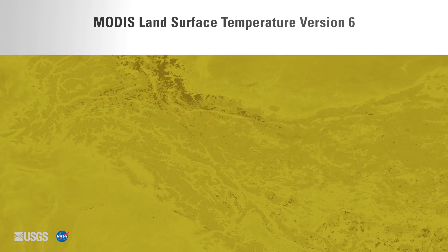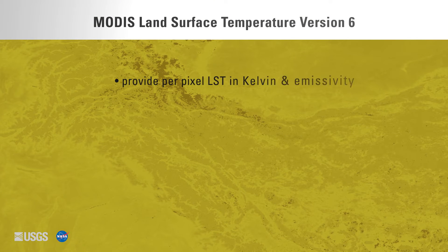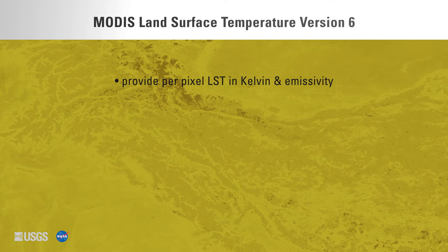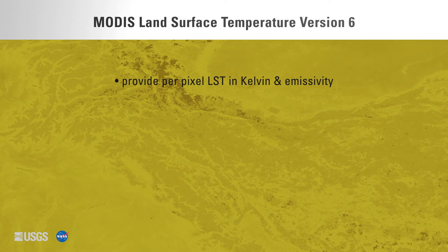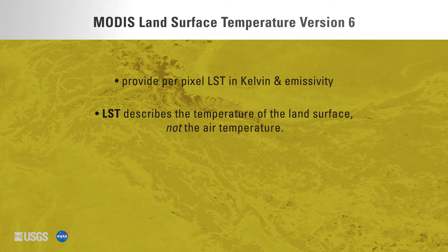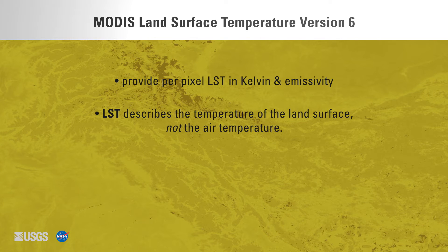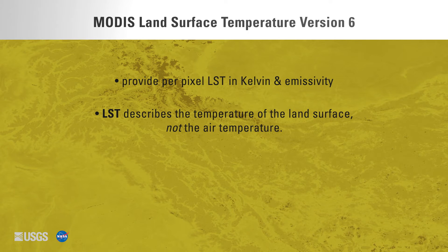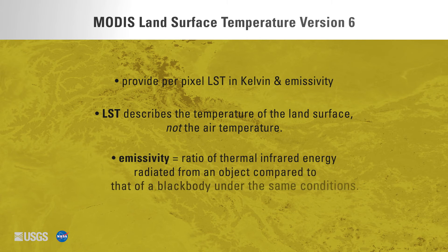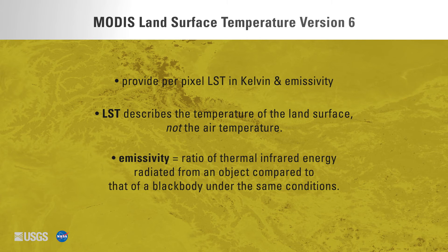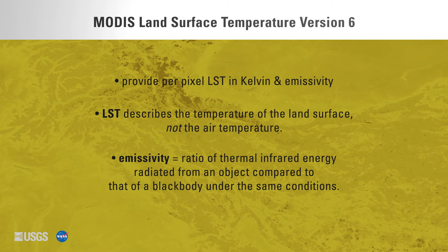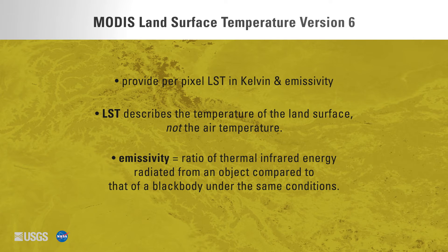The MODIS land surface temperature version 6 products provide per-pixel land surface temperature, or LST, in Kelvin, and emissivity. LST describes the temperature of the land surface, not the air temperature. Emissivity is the ratio of thermal infrared energy radiated from an object compared to that of a black body under the same conditions.